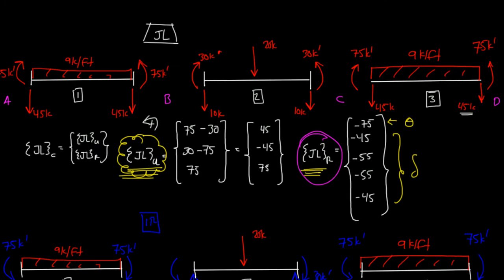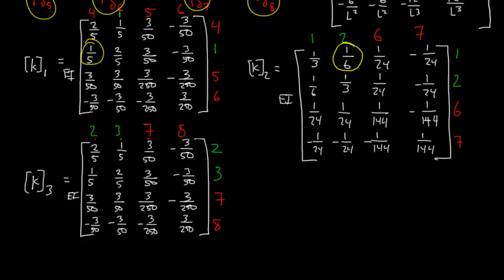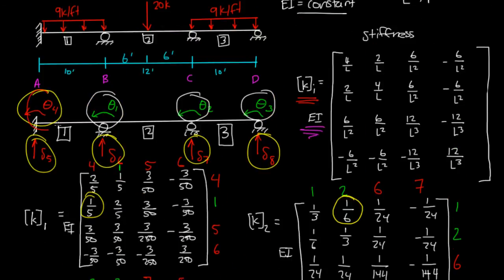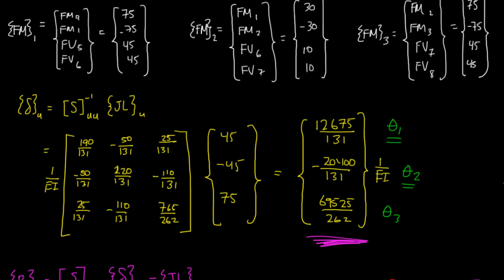And if you remember, 4 was a rotational degree of freedom, a rotational degree of freedom. So that becomes a moment. 5, 6, 7, and 8 were all vertical. They were all vertical degree of freedom. So those are just kips.